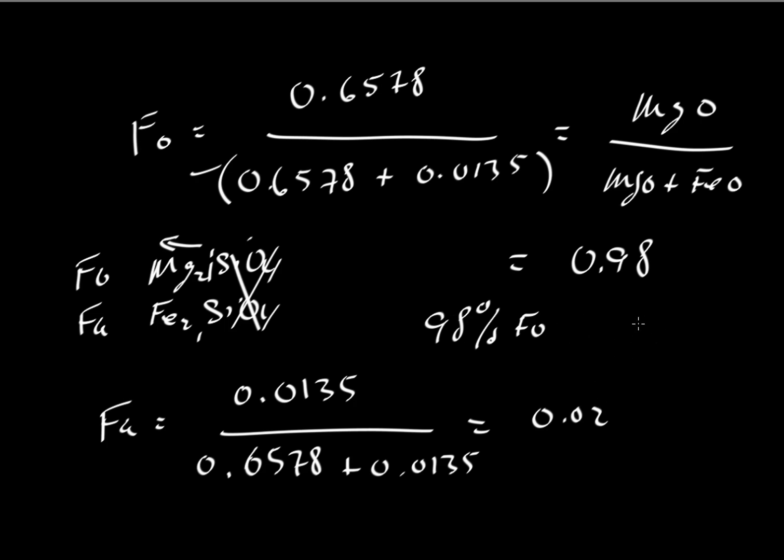So we have something that is 98% forsterite. Notice that with only two components, we didn't really need to do this calculation. But it is a good check to make sure we did this one correctly. So anything that is 98% forsterite should also be 2% fayalite, which we've determined here.